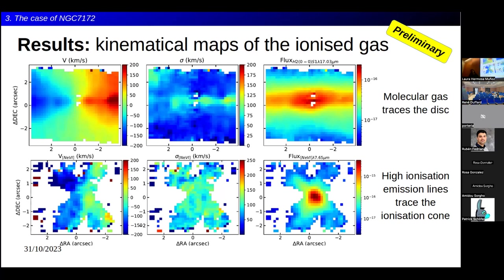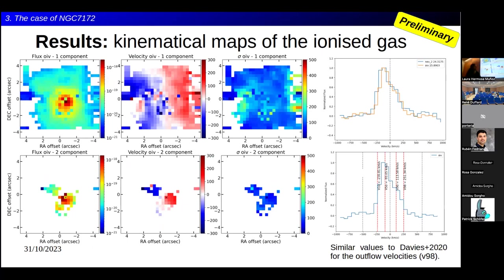Could you go back to where you showed the Ne V line? That Ne V measurement — is it at 24 microns or at 14 microns? It's at 24 microns. Can you compare it to the Ne V at 14 microns? I have the line ratio, but I cannot show it right now. In any case, using the line ratio with other Ne V features is really nice because we can actually see the AGN contribution very clearly.